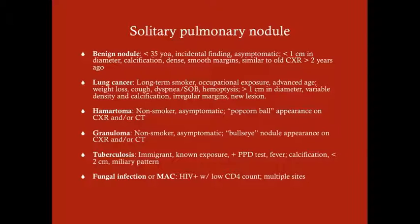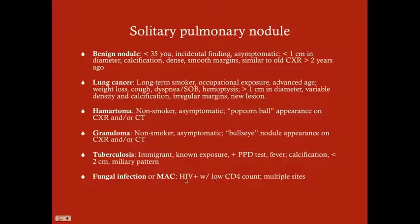Tuberculosis can also cause an apparent solitary pulmonary nodule, though it's uncommon in the US and typically occurs in immigrants, those with known exposure, a positive PPD, or the immunocompromised. These are usually less than 2 cm with some calcification, and sometimes show a miliary pattern. In severely immunocompromised patients (e.g., HIV with CD4 below 100-150), Mycobacterium avium complex or fungal infections can produce multiple pulmonary nodules.